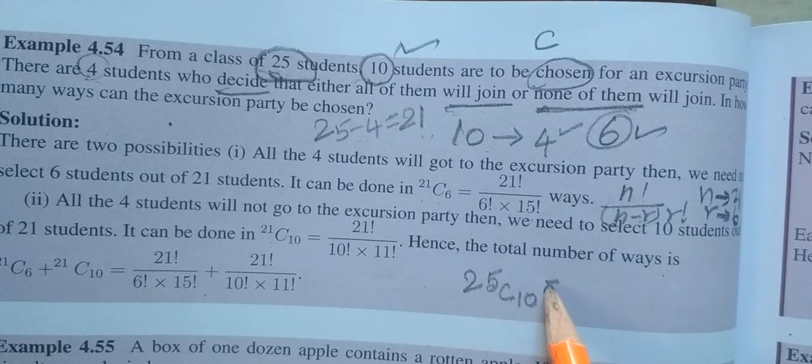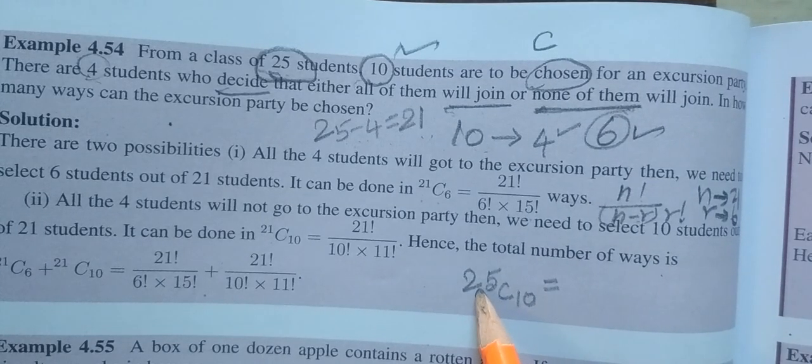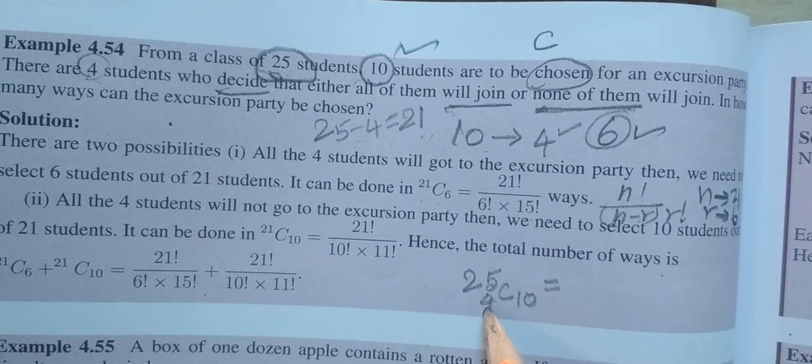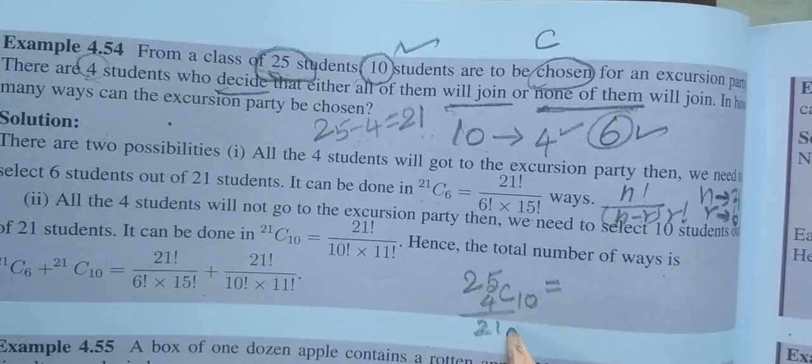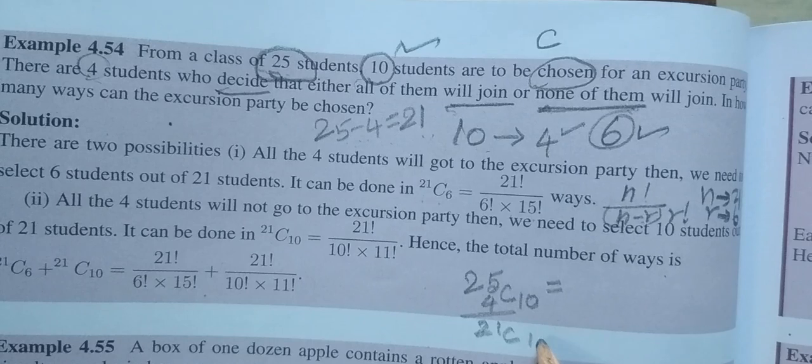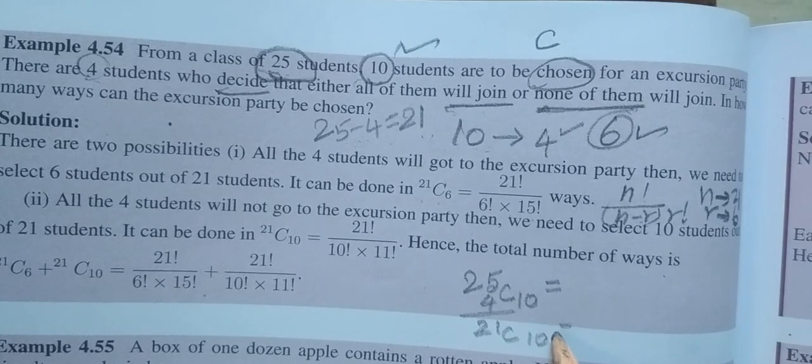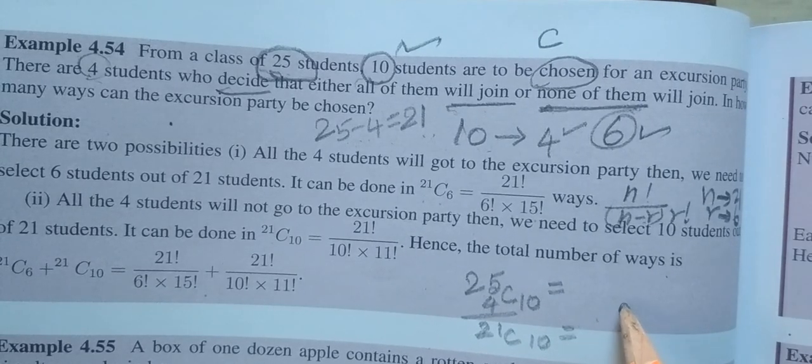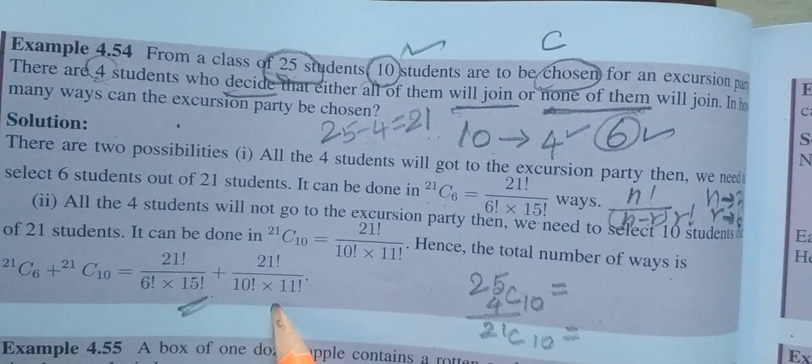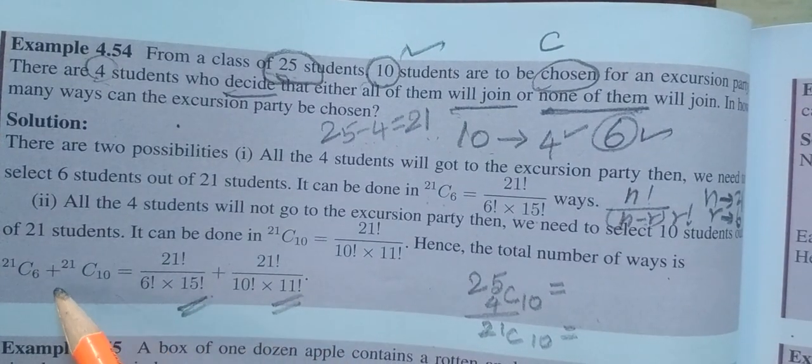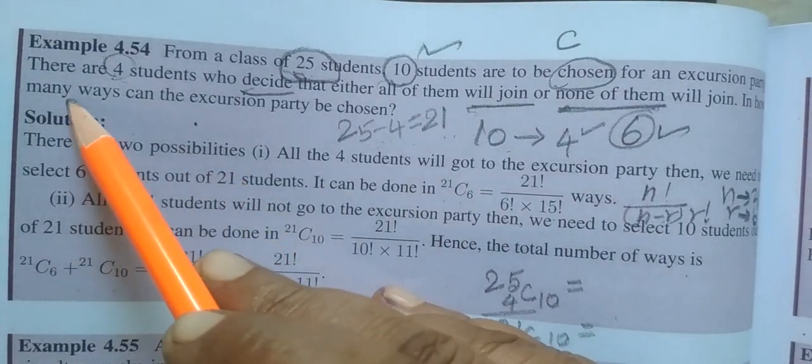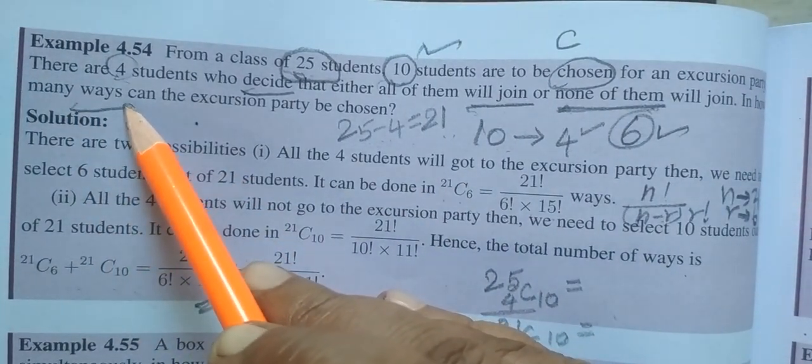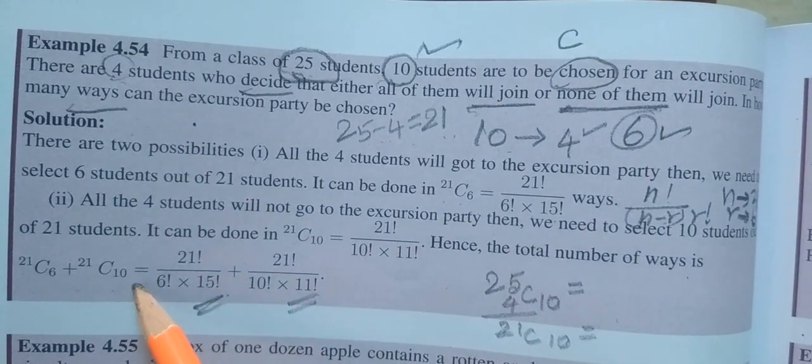There is a doubt. In this case, there are 4 students separate. There are 21 students. We are selecting 10 students. We are making the calculation for this. Condition No.1, Condition No.2. Add the two. How many ways? Total ways. Condition No.1 add Condition No.2.